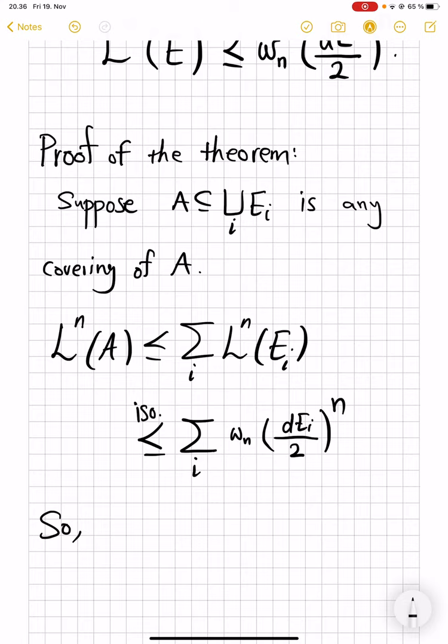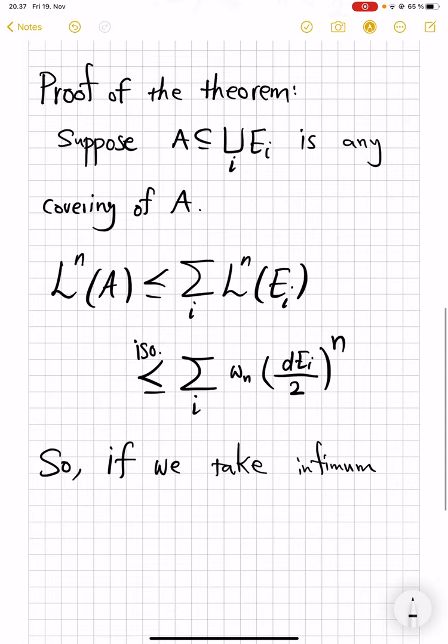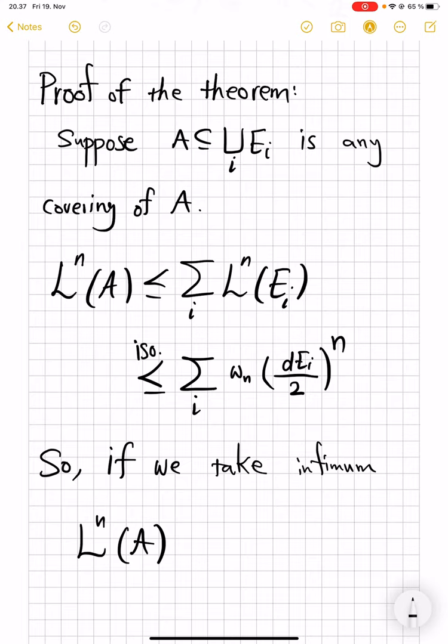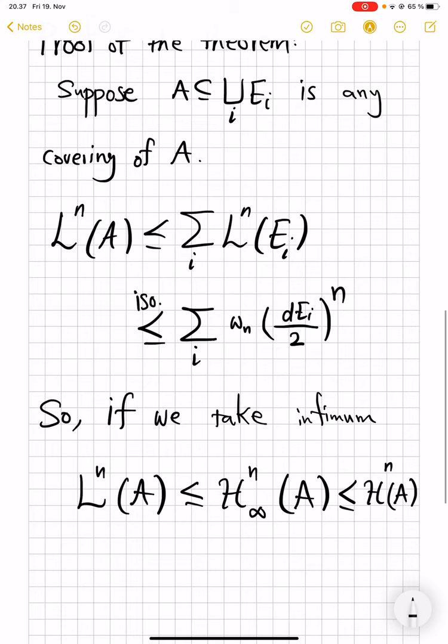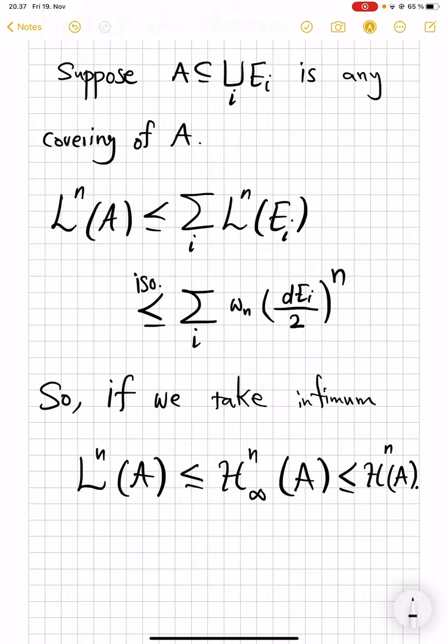But now this is true for every covering, so if we take infimum over all coverings, we end up with L^n of A less than or equal to H^n_∞ of A. Because we had no restriction on how big the diameters are, and this one is always less than H^n of A.